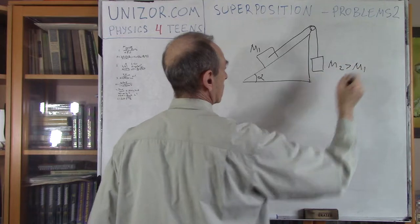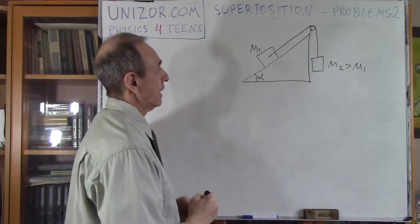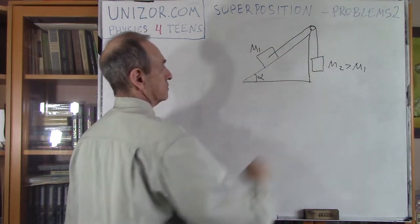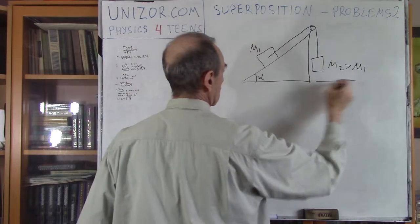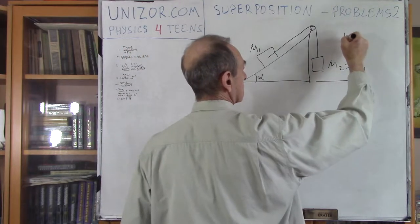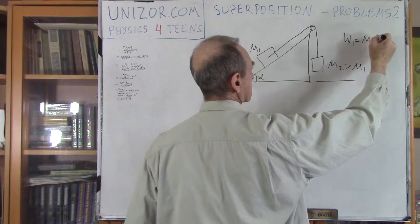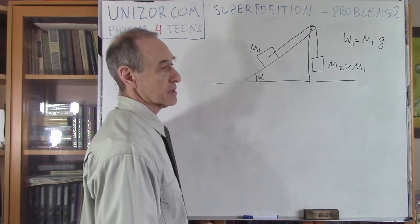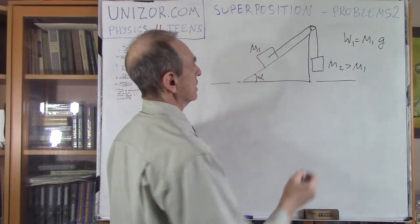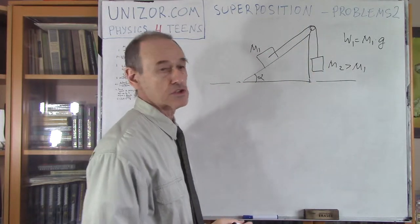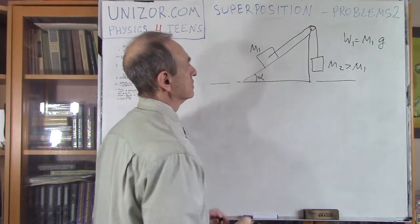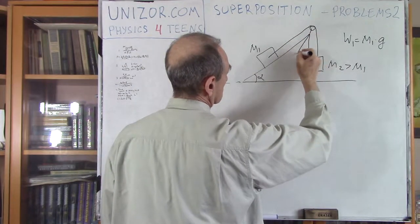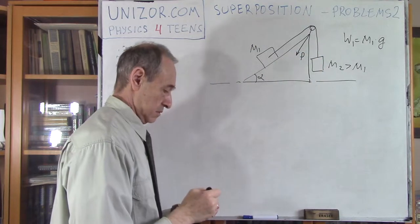Let's consider that M2 is greater than M1, which means the thread is moving this way down. This is all happening on Earth, so the weight is equal to mass times the acceleration of free fall, which is 9.8 meters per second squared. As this combination of the two masses moves around the pulley, it exerts a certain pressure on the pulley, and I need to find the value of this pressure.